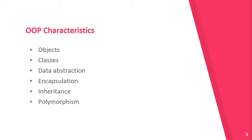First, we will start with Object Oriented Programming. So basically, we have Objects, Classes, Data Abstraction, Encapsulation, Inheritance, and Polymorphism.